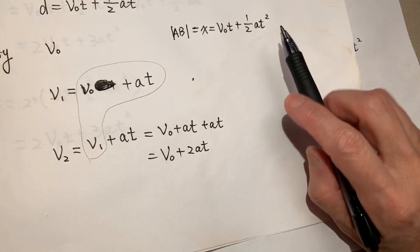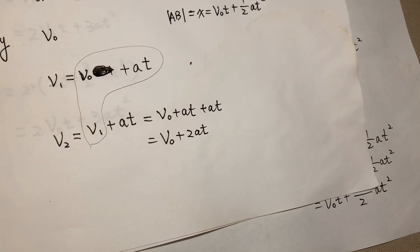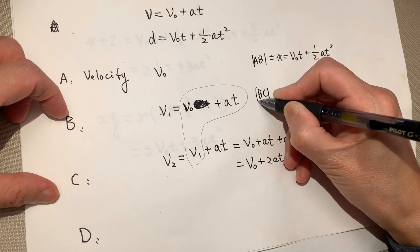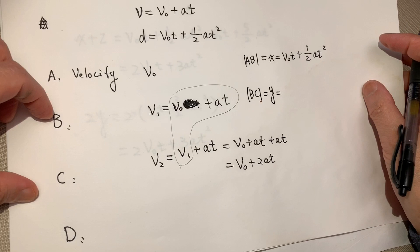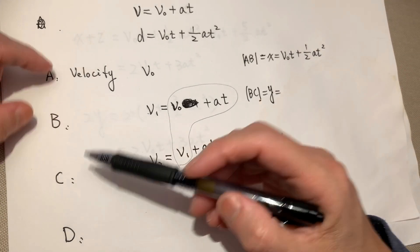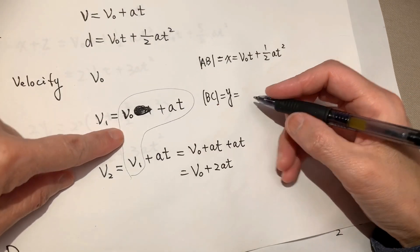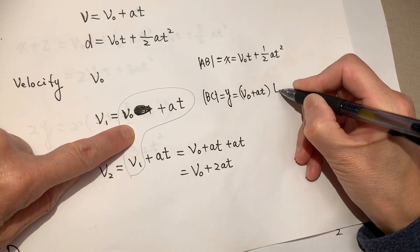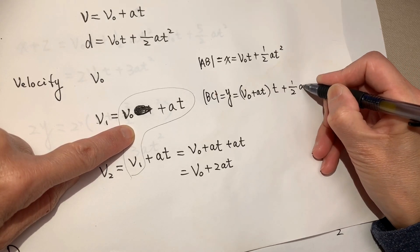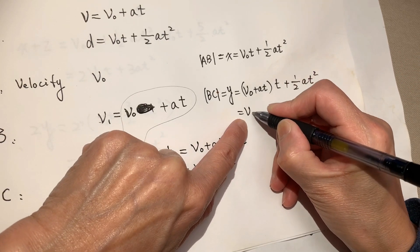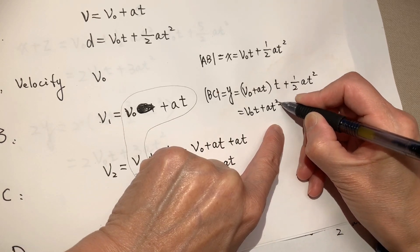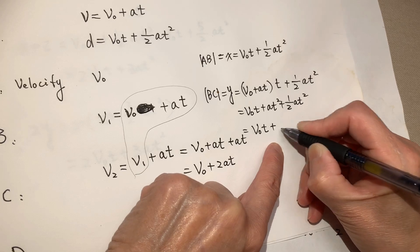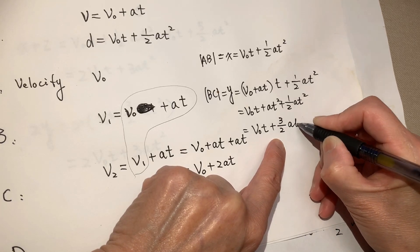So from A to B. Now from B to C. Oh, sorry. Let me raise it a little bit higher so you can see. From B to C. BC equal to Y, as it tells us, is the initial speed. From BC, the initial speed is V1. So initial speed is V0 plus AT times time it used plus half AT squared. Open it up, equal to V0T plus AT squared plus half AT squared. Equal to V0T plus 3 over 2 AT squared.